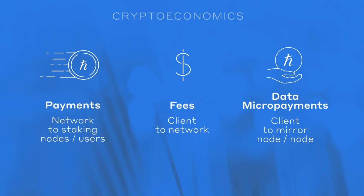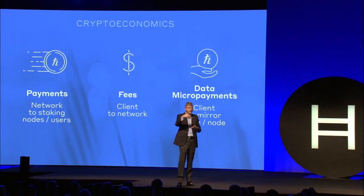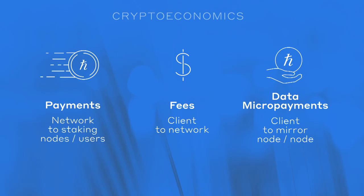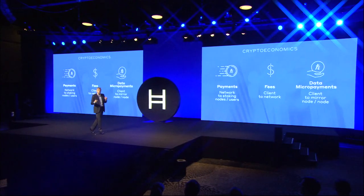If you want to use the network, you pay a transaction fee, as you might imagine. So that's coming in while the payments are going out. And then you can also have data micropayments, which is really interesting. You can be making these little tiny micropayments for information from the network, from the nodes, and even from mirror nodes, which anyone who wants to be can be a mirror node for free. And then you can sell information to people, and you can sell services around the information to people.